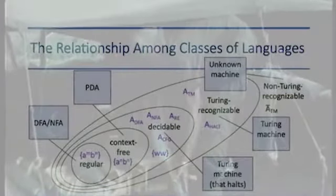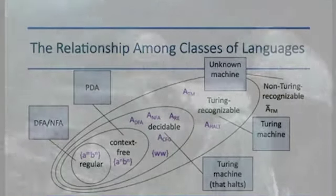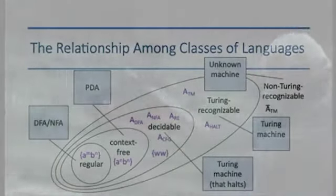We have languages measured by PDA, and then we have other languages which are decidable for which a Turing machine which always halts exists.